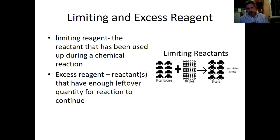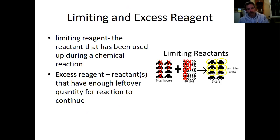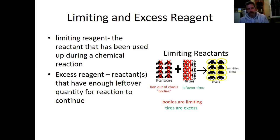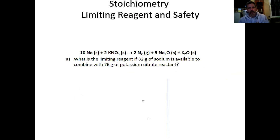Recall the analogy of car bodies versus tires: one car body needs four tires, and you keep manufacturing cars until you run out of something. We ran out of bodies, which limits our ability to make more cars — so car bodies are the limiting reagent, and the leftover tires are the excess.